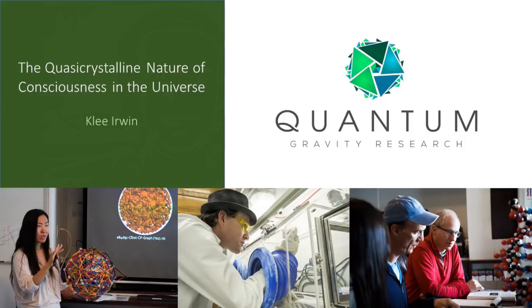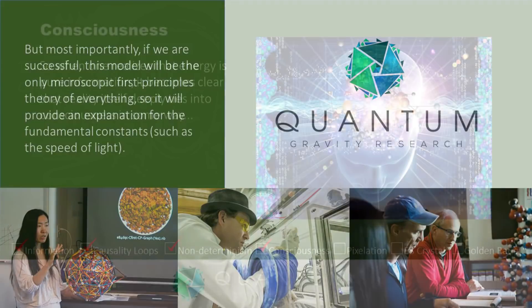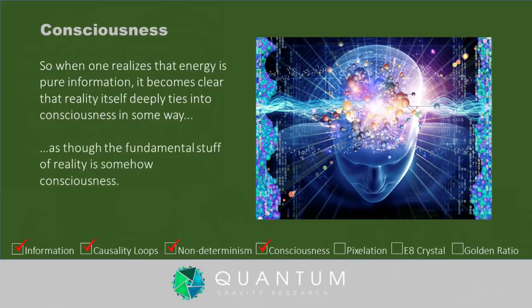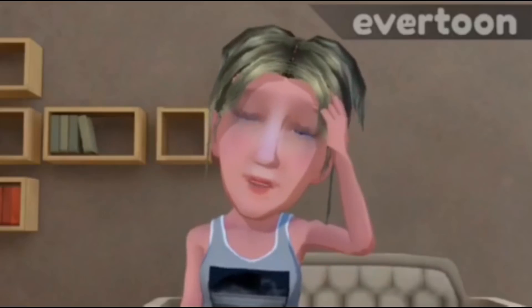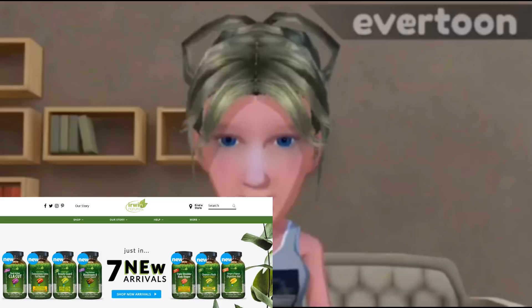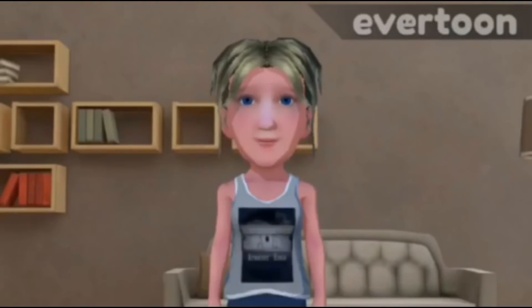As for author — well, his articles and so-called research papers consist of topics such as cold fusion, the golden ratio, two-dimensional crystals, eight-dimensional crystals, and the meaning of consciousness. This talk is called 'The Quasi Crystalline Nature of Consciousness in the Universe.' Quote: if we are successful, this model will be the only microscopic first-principles theory of everything, providing an explanation for fundamental constants such as the speed of light. When one realizes that energy is pure information, it becomes clear that reality itself deeply ties into consciousness — as though the fundamental stuff of reality is somehow consciousness. Unquote.